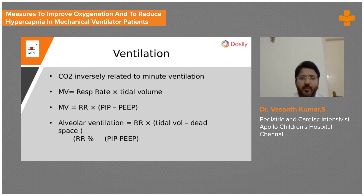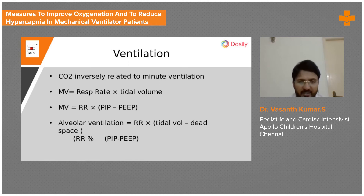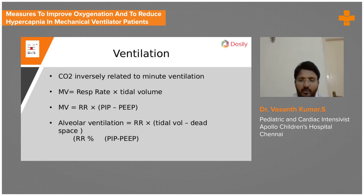An important concept is alveolar ventilation. Minute ventilation is the total ventilation, but what matters is alveolar ventilation, because areas like the bronchi and upper airways do not participate in gas exchange. Ventilation occurring there is called dead space ventilation, which is typically around 1 to 2 ml/kg. You always have to subtract dead space from total minute ventilation to get alveolar ventilation.